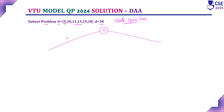We consider the first component, 5. If we add 5, the solution is 0 + 5 = 5. If we do not add 5, the solution remains 0. Every step, we check: with this component, what is the solution? Without this component, what is the solution? The left subtree always represents including that component; the right subtree represents excluding it. This is how we construct the state space tree.